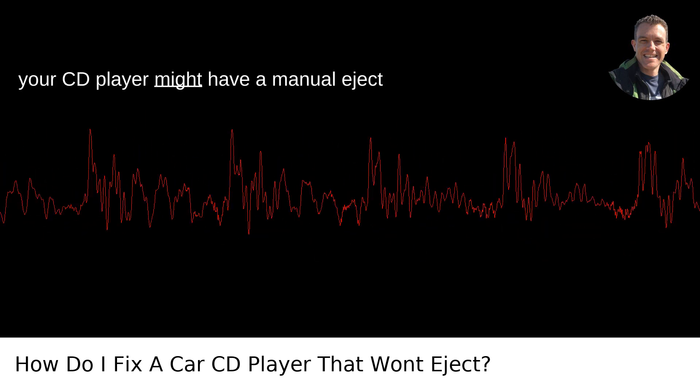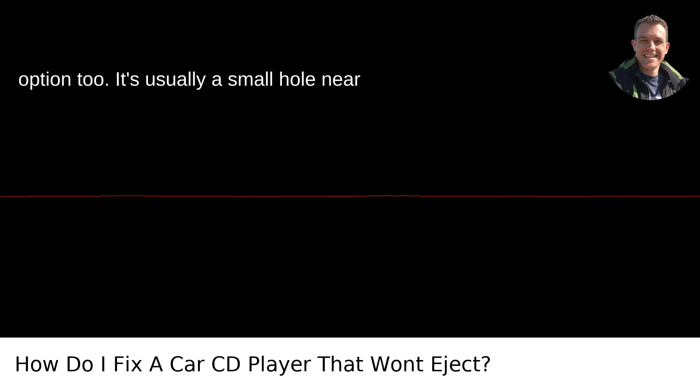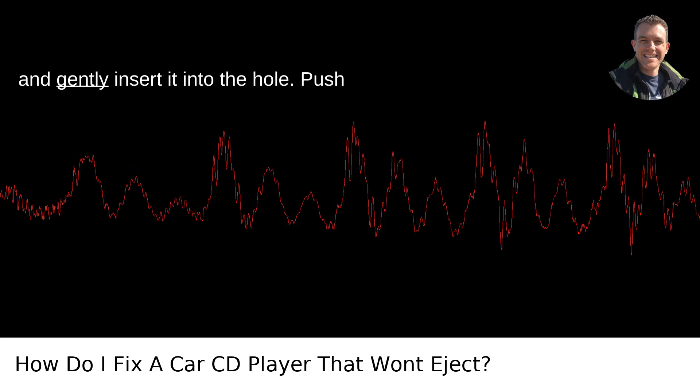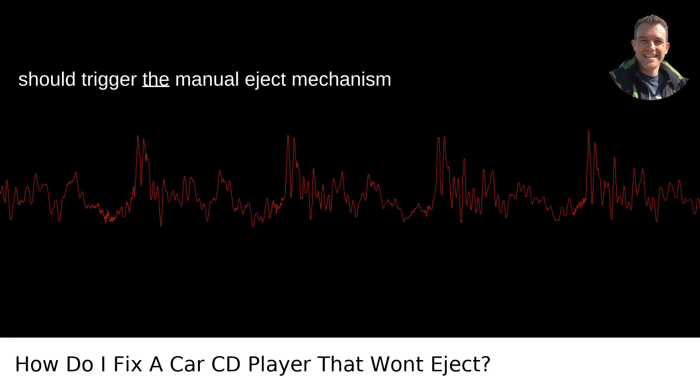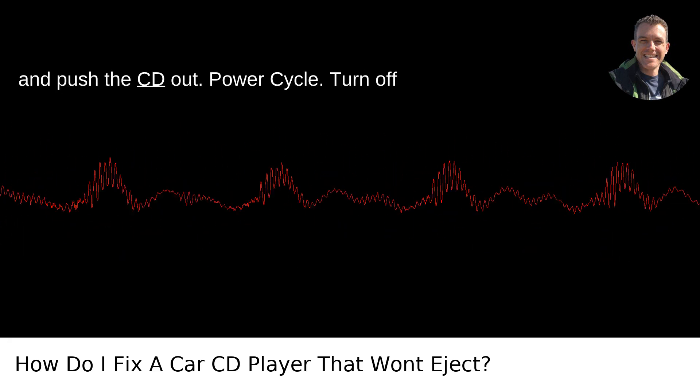Manual eject: your CD player might have a manual eject option too. It's usually a small hole near the CD slot. Straighten out a paperclip and gently insert it into the hole. Push until you feel a bit of resistance. This should trigger the manual eject mechanism and push the CD out.